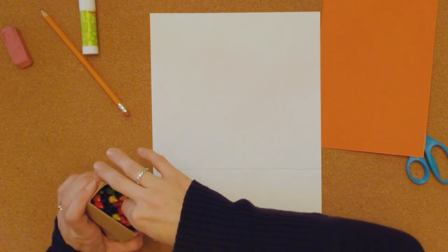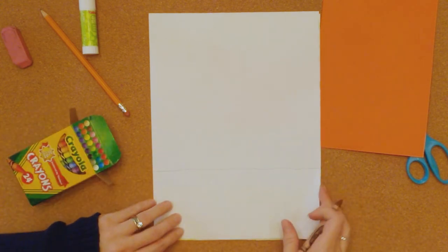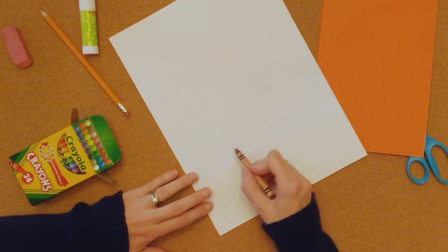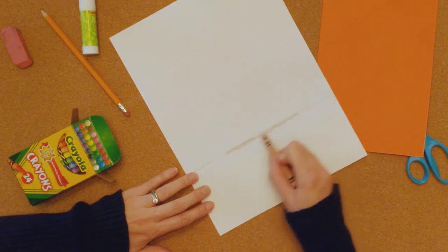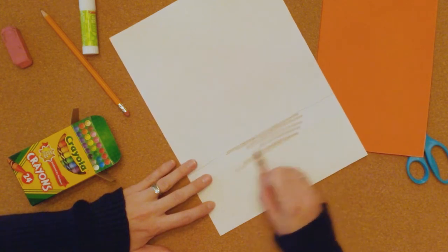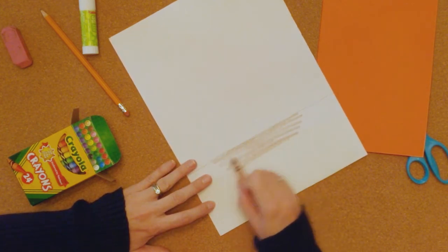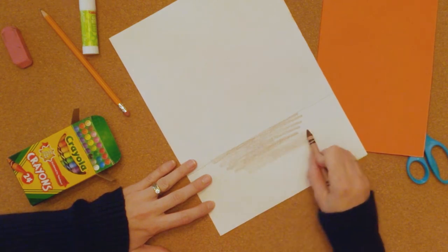Just choose what color you want your ground to be. I think where the teepee is going to sit on mine, I'm going to make it brown because people are coming in and out of that teepee. So nothing's really alive around there.